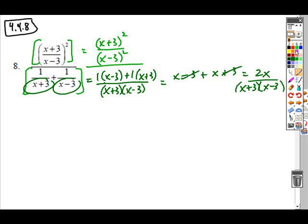So the next step here is to invert and multiply. If I take my numerator, I invert my denominator so that 2x moves to the denominator, x plus 3, x minus 3 gets moved up to the numerator.